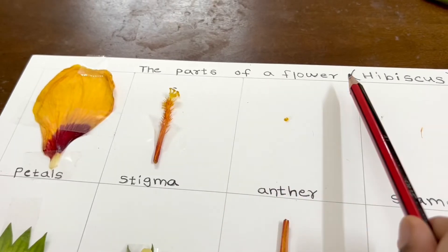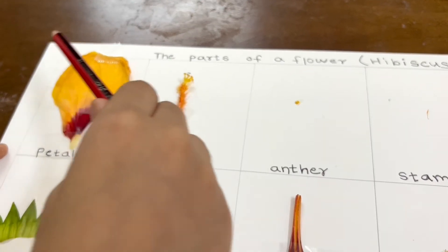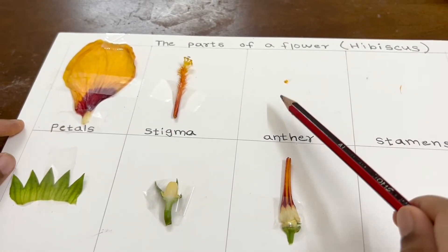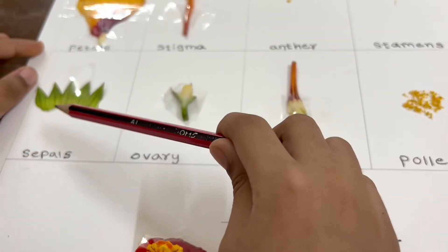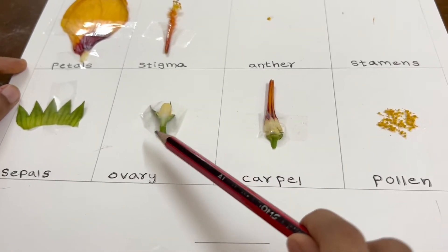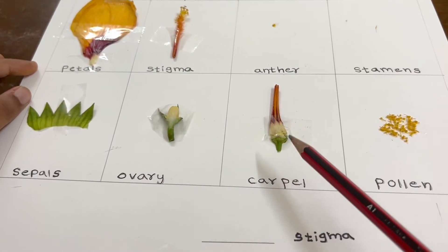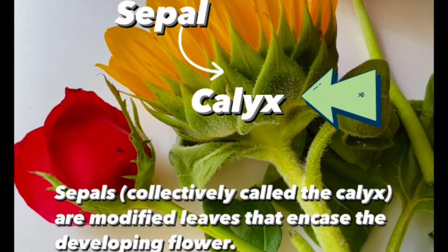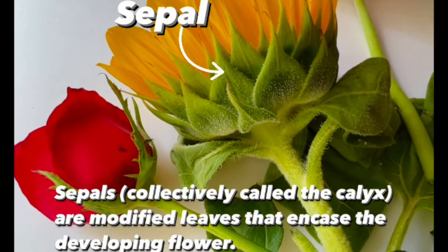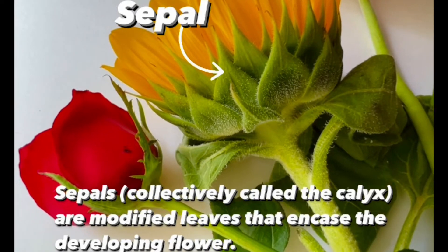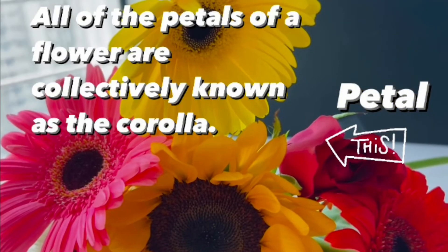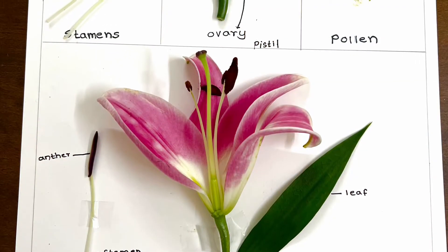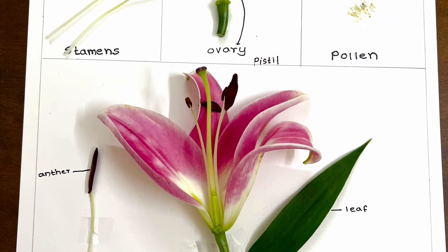The parts of a flower — hibiscus: petals, stigma, anther, stamen, sepals, ovary, carpel, pollen, calyx. Sepals, collectively called the calyx, are modified leaves that encase the developing flower. Petal: all the petals of a flower are collectively known as the corolla.